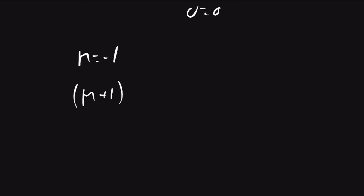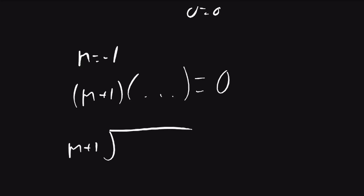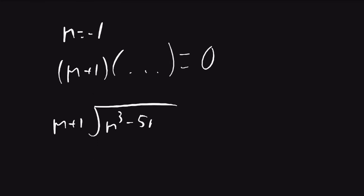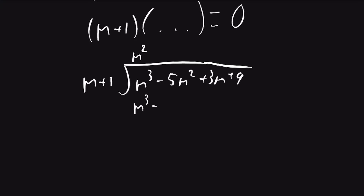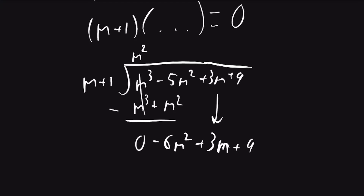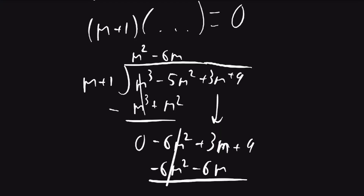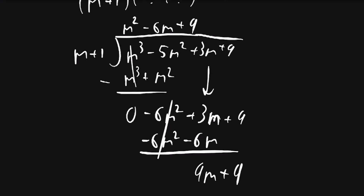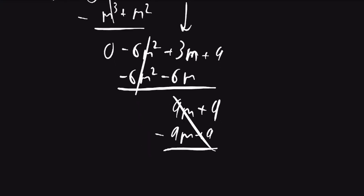This means that m plus 1 times some unknown is going to equal 0. To find this unknown, we can do long division and divide the polynomial m cubed minus 5m squared plus 3m plus 9 by m plus 1. The first term is m squared, giving m cubed plus m squared; subtracting leaves negative 6m squared. Bringing down gives negative 6m squared plus 3m plus 9. The next term is minus 6m, giving minus 6m squared minus 6m; subtracting leaves 9m plus 9. The final term is plus 9, giving 9m plus 9, and everything cancels with a remainder of 0.